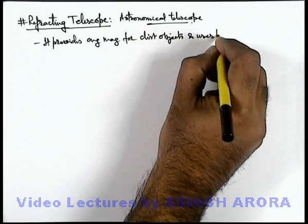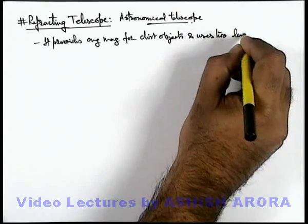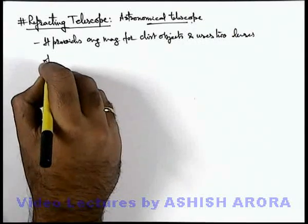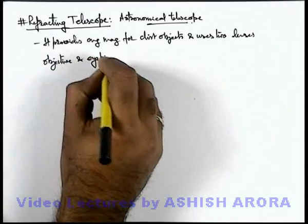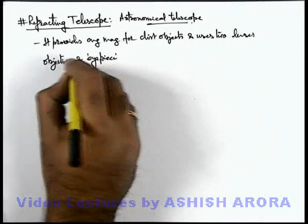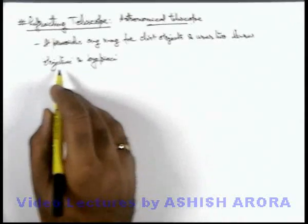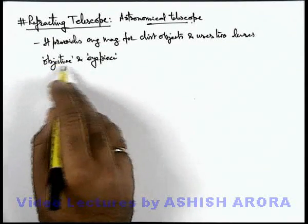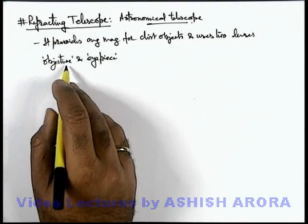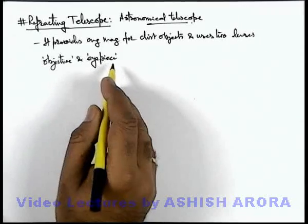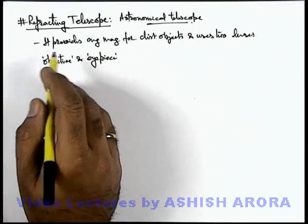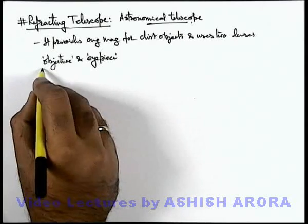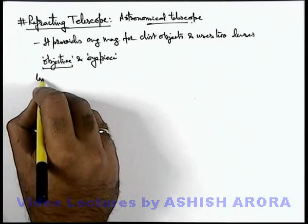It uses two lenses: objective and eyepiece for this purpose. Similar to compound microscope, objective is the one which is closer to the object, toward the object side, and eyepiece is the one closer to the observer side. The only difference from microscope lenses is that here objective is of quite large aperture.